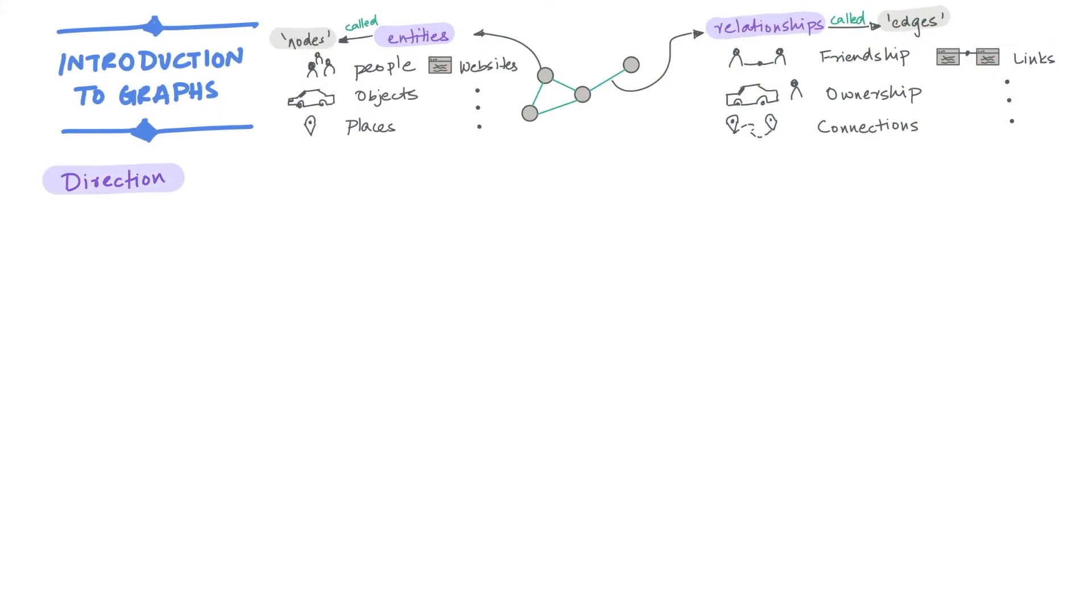Now let's look at some of the characteristics of graphs. Edges can either be undirected or directed. An example of an undirected graph would be data that represents a friend network on Facebook.